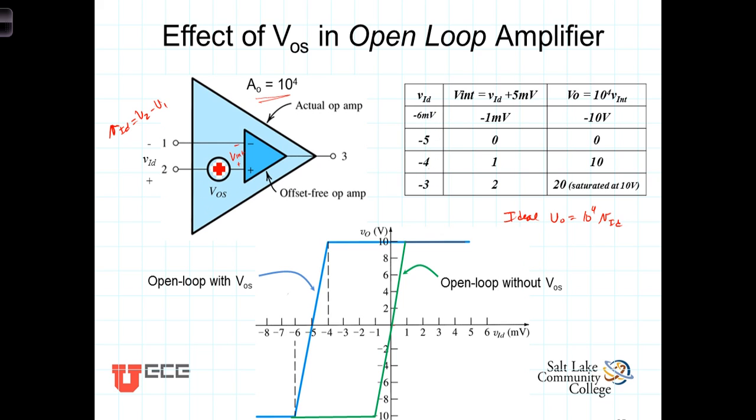So KVL then will yield that the internal voltage, Vint, is equal to VID plus 5 millivolts. Because of this offset voltage, VID needs to be minus 5 volts to give us an internal voltage of 0 volts that would then yield an output voltage of 0 volts.